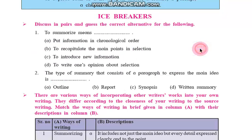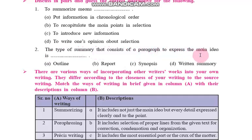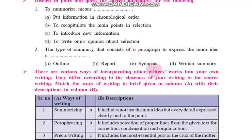Second question: The type of summary that consists of a paragraph to express the main idea is — options include outline, report, and synopsis. Synopsis means 'saraunsh' or 'sankshipta.' The answer is synopsis. The type of summary that consists of a paragraph to express the main idea is called a synopsis.